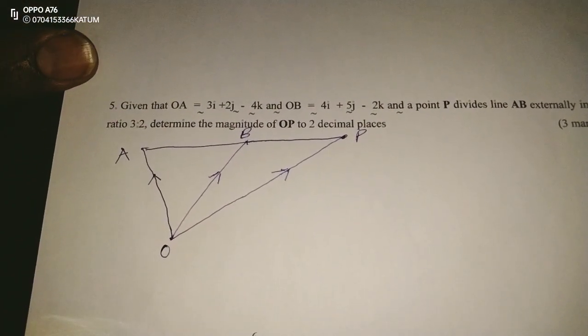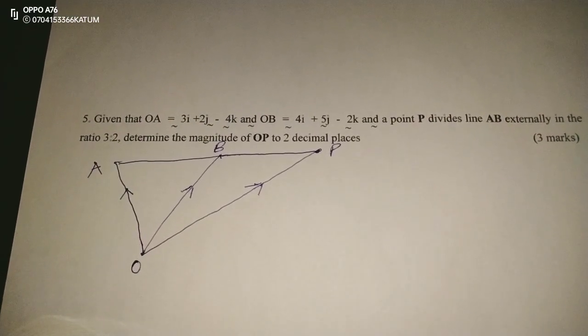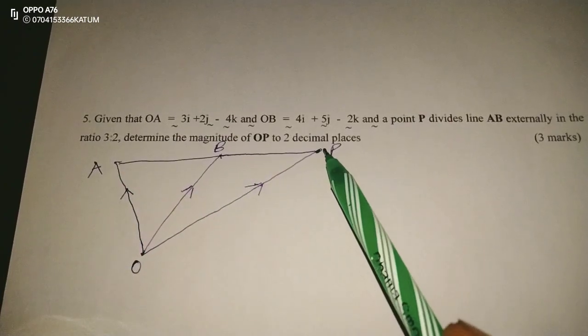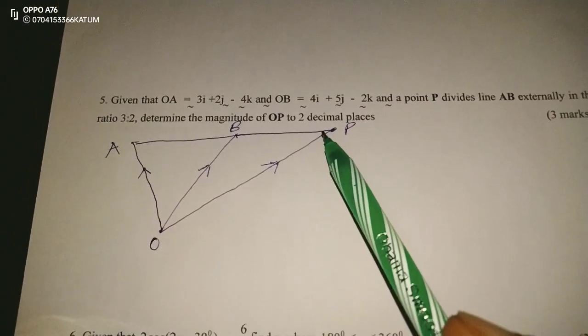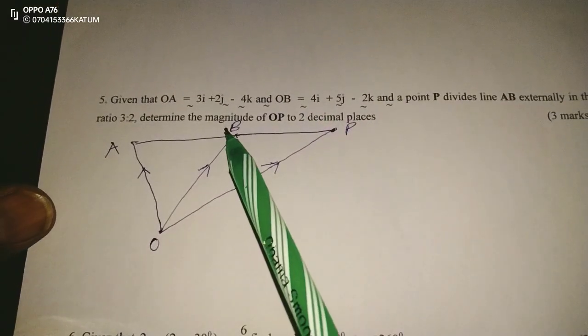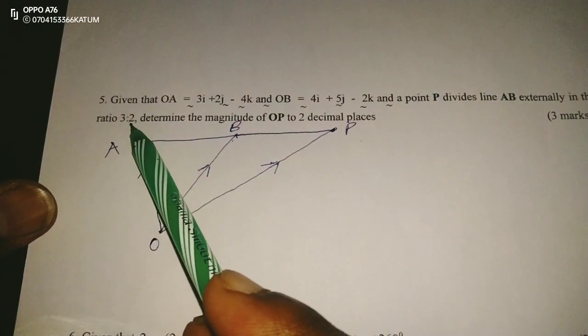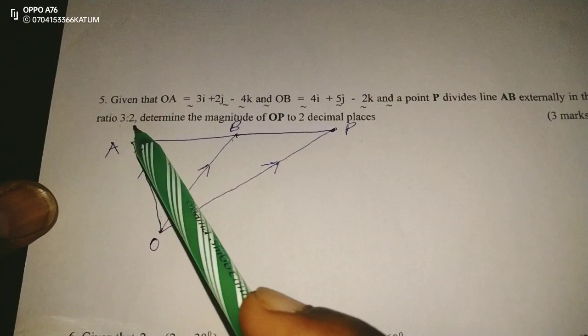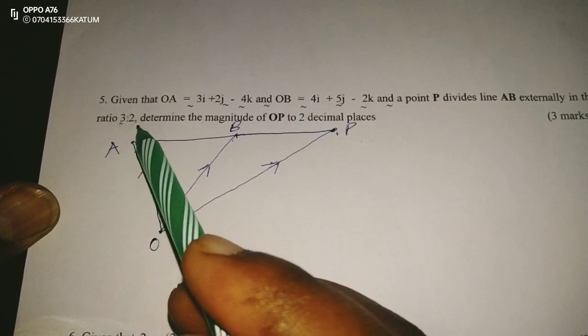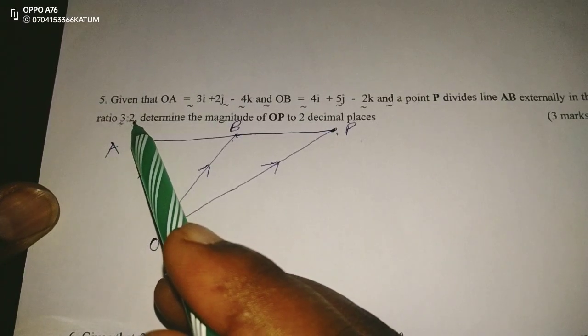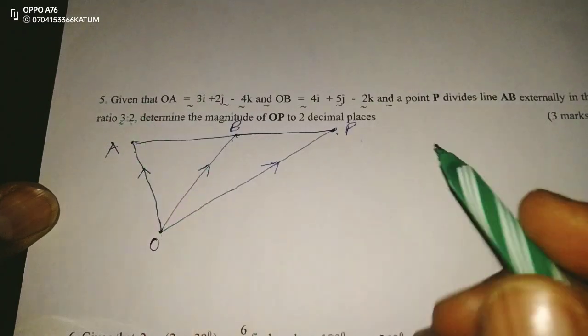So in this now, we are told, we are given the position vectors of A and B, but that of P is not known. But this can be determined anyway. Remember, the ratios can first of all be placed. P is dividing AB in the ratio 3 is to 2, and this is happening externally. So it means from A to where P is, we have 3 units. Then because it is externally now, we get back 2 units. That is what it means by 3 is to 2 externally.